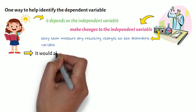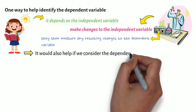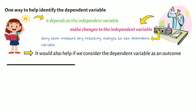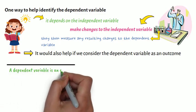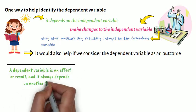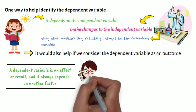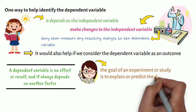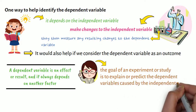It would also help if we consider the dependent variable as an outcome. A dependent variable is an effect or result, and it always depends on another factor. As is well known, the goal of an experiment or study is to explain or predict the dependent variables caused by the independent variable.